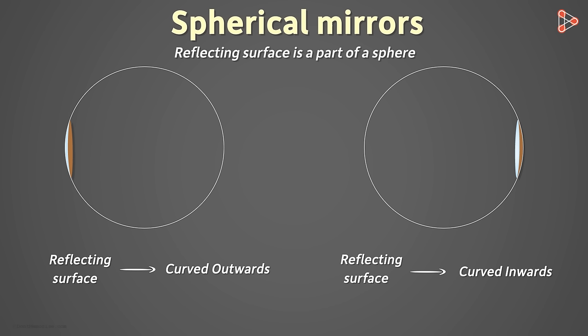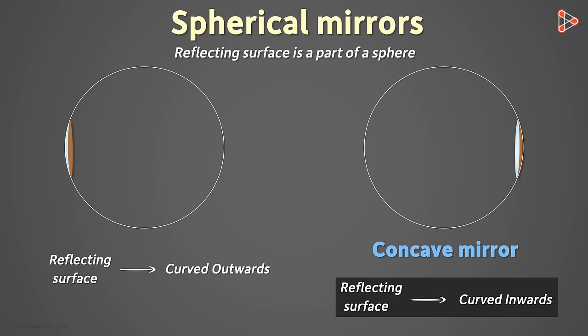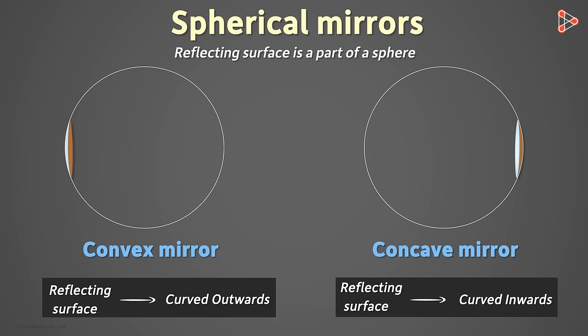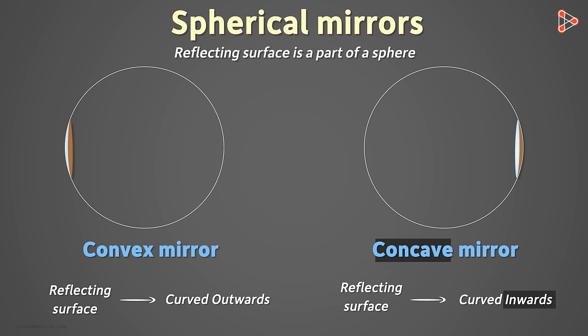Now both these are given special names. The mirror that has its reflecting surface curved inwards is called a concave mirror, and the mirror that has its reflecting surface curved outwards is called a convex mirror. Yes, inwards is concave and outwards is convex.